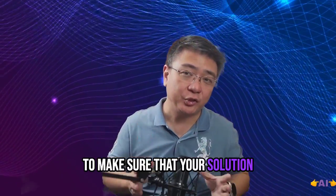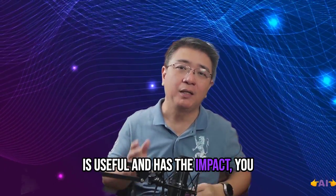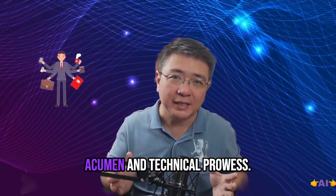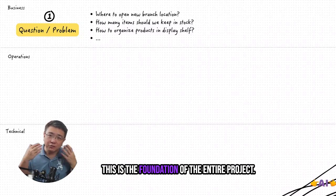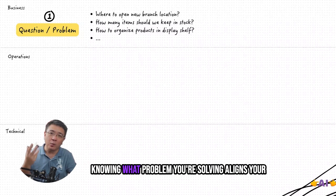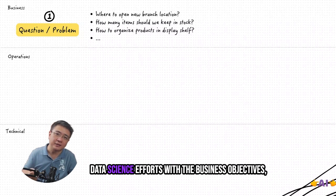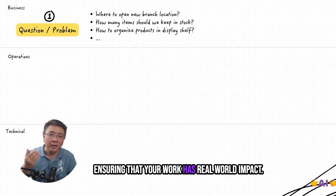To make sure that your solution is useful and has impact, you need to have a blend of business acumen and technical prowess. Your first step is to understand the business problem. This is the foundation of the entire project. Knowing what problem you're solving aligns your data science efforts with the business objectives, ensuring that your work has real-world impact.